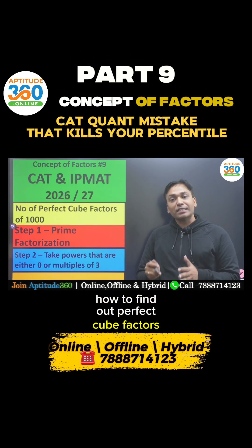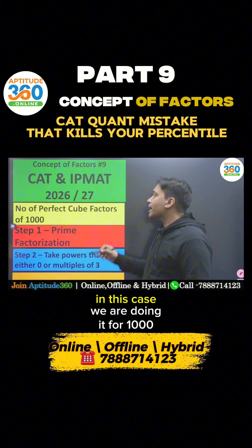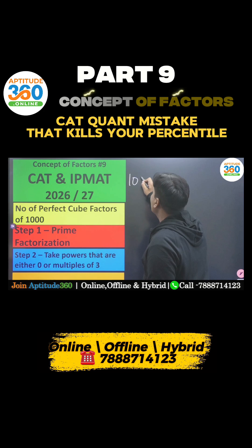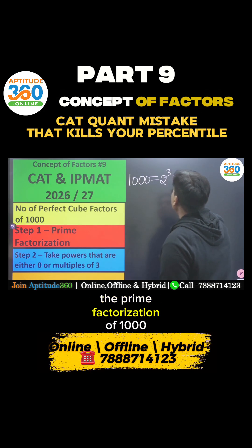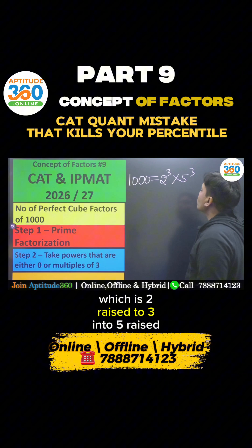How to find out perfect cube factors of any given number. In this case, we are doing it for 1000. Step number one, we need to find out the prime factorization of 1000, which is 2 raised to 3 into 5 raised to 3.